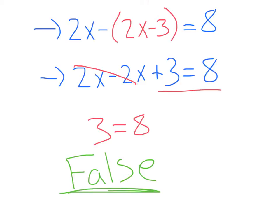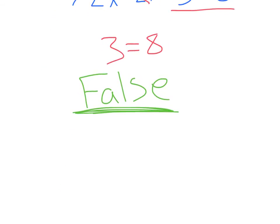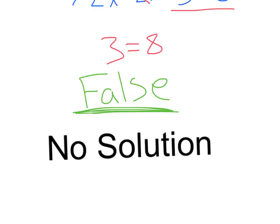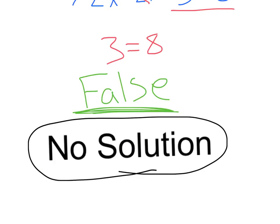This statement is completely false. If you ever eliminate all your variables and end up with a false statement, in this case, our answer is going to be no solution. Since it's false, no x or y is going to make that possible. We've got no solution, and that is our second special case.